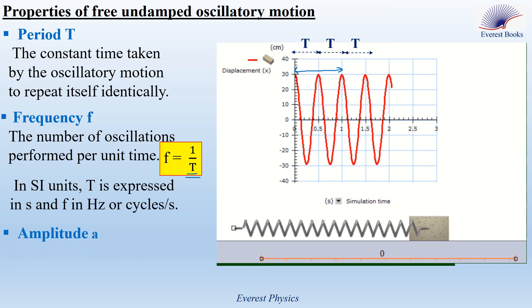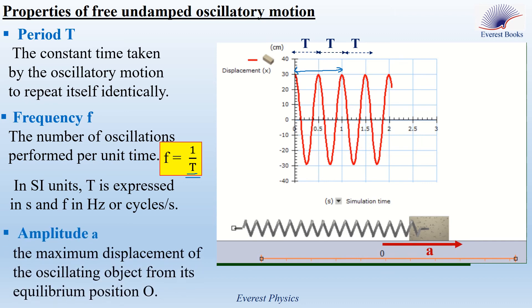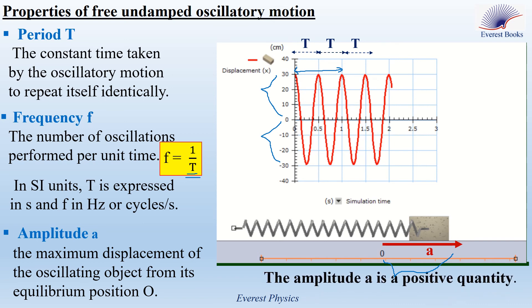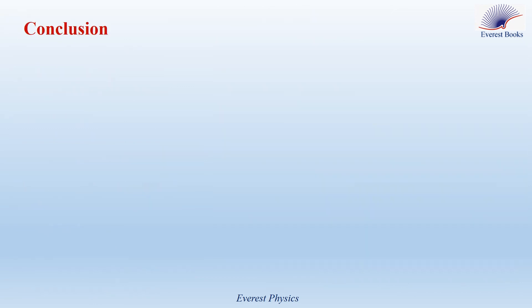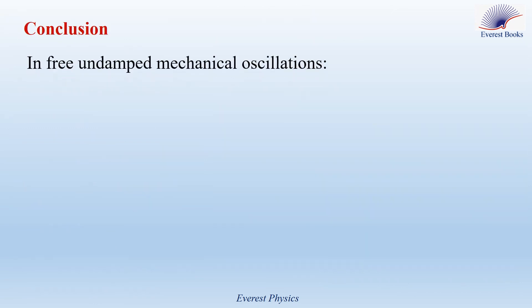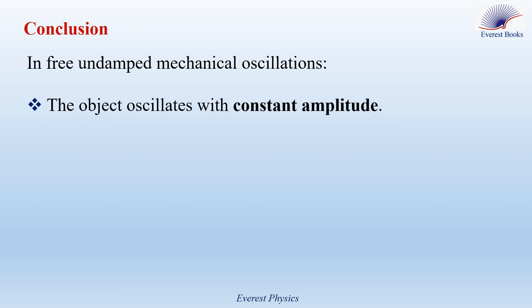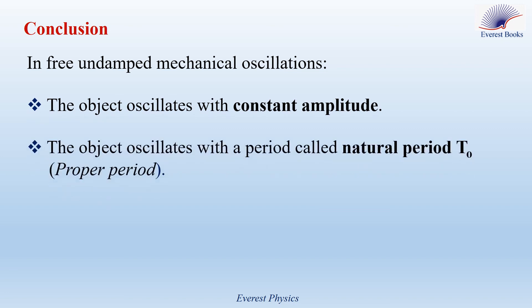The third property is amplitude. Amplitude is the maximum displacement of the oscillating object from its equilibrium position. On the graph, our amplitude is 30 centimeters. You can take it above or below the time axis because the amplitude is a positive quantity. In conclusion, in free undamped mechanical oscillations, the object oscillates with constant amplitude. The object oscillates with a period called the natural period, denoted by T0; some references call this the proper period.